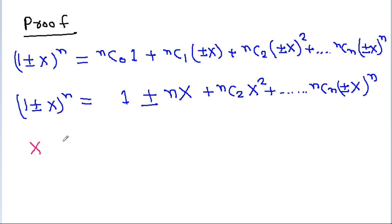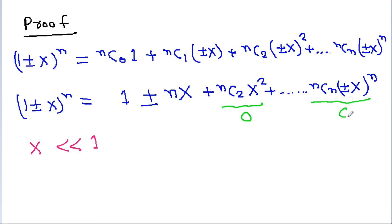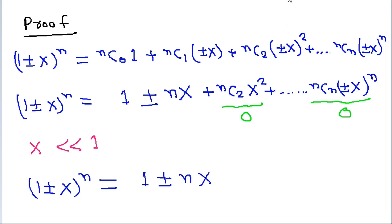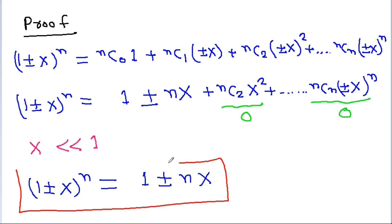Since |x| is much less than 1, x² will be very very small, approximately 0, and higher powers of x become even smaller and approach 0. Therefore (1 ± x)^n is approximately equal to 1 ± nx, and this is the binomial approximation.